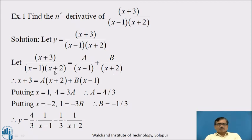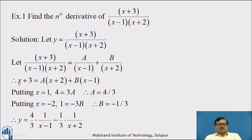Multiplying both sides by (x − 1)(x + 2), we get x + 3 = A(x + 2) + B(x − 1). To find A, put x = 1: left-hand side gives 4, and right-hand side gives 3A, so A = 4/3. To find B, put x = −2: left-hand side gives 1, and right-hand side gives −3B, so B = −1/3.